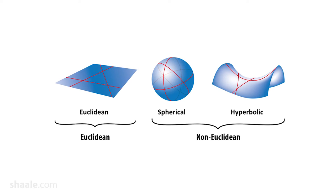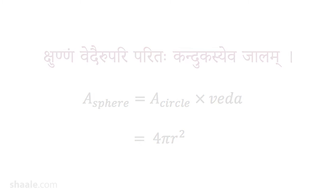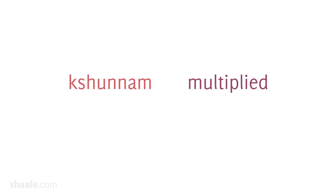He says that you have to simply multiply by 4 to get the surface area of a sphere. How does he say it? 'Kshunnam vedaihi' — kshunnam means multiplied, vedaihi means by 4. 'Kshunnam vedaihi' — what does this give you? 'Upariparitaha' — on the surface, paritaha, completely.